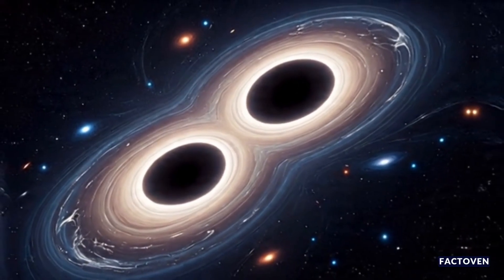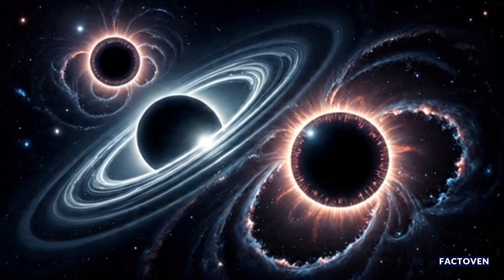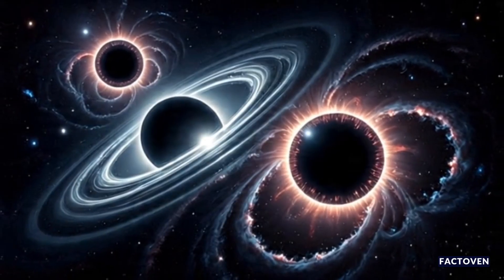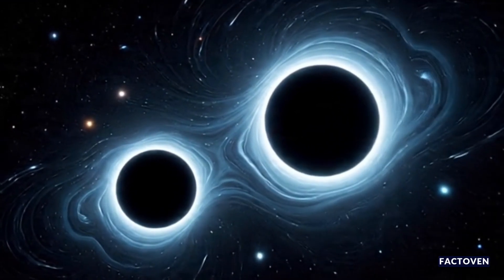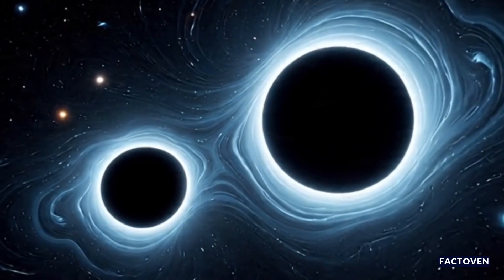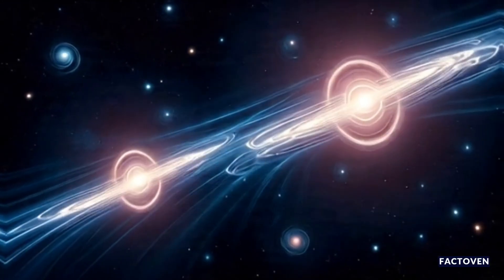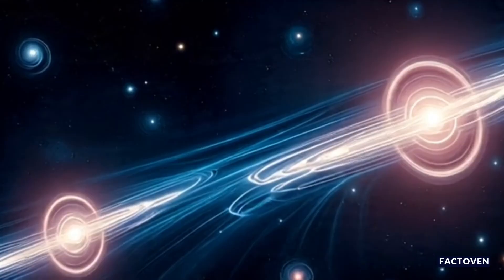We've seen that before. But this time, hidden inside one of those ripples, astronomers think they've uncovered a mysterious third partner. If true, this would be the first ever detection of a trinary black hole system, three black holes locked in a deadly gravitational dance.